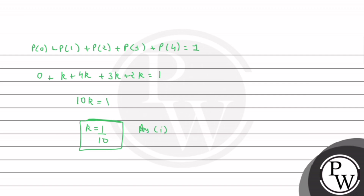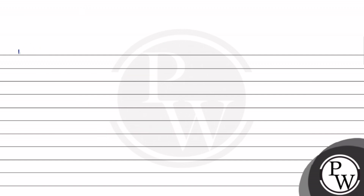Now, what do we do for the second part? We have to find p when x is greater than or equal to 2. So, probability when x is 0, plus probability when x is 1, plus probability when x is 2.